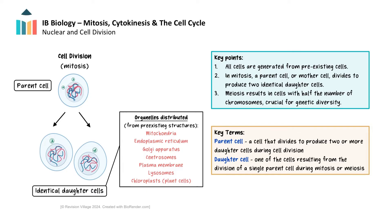Other organelles distributed to the daughter cells include the endoplasmic reticulum, Golgi apparatus, centrosomes, plasma membrane, lysosomes, and chloroplasts in plant cells. In mitosis, it is important to note that the chromosome number and genome of the two daughter cells are identical to the original cell. This is not to be confused with meiosis, which is another form of cell division involved in the production of sex cells.